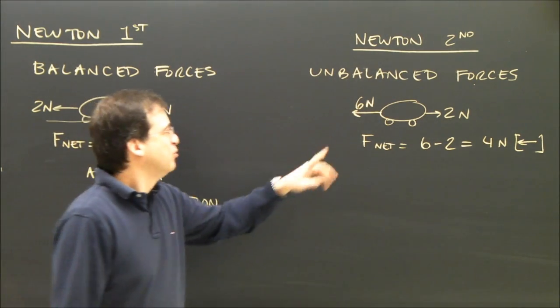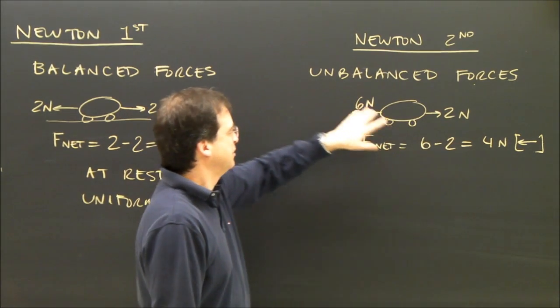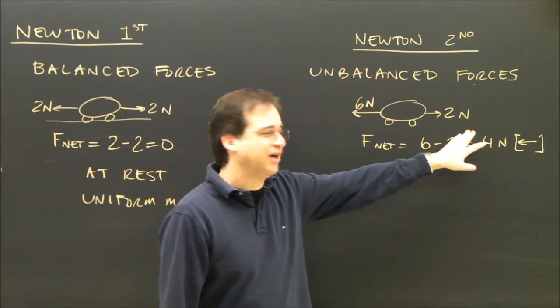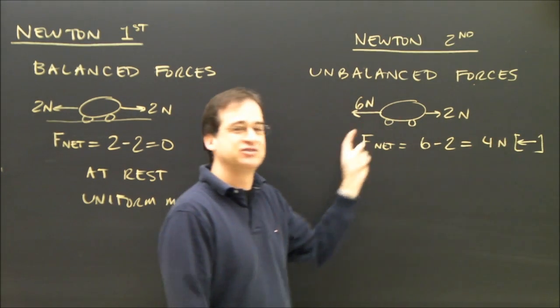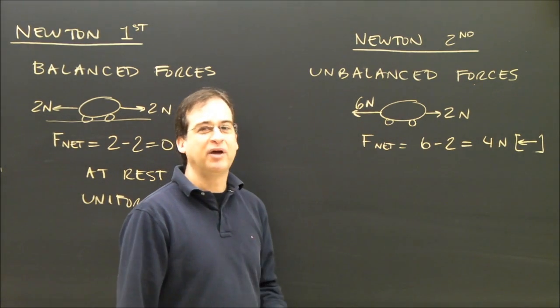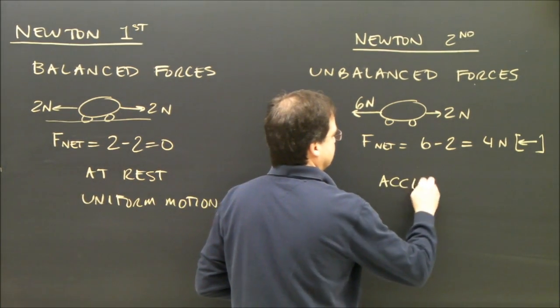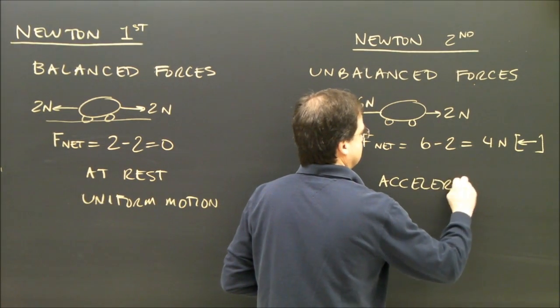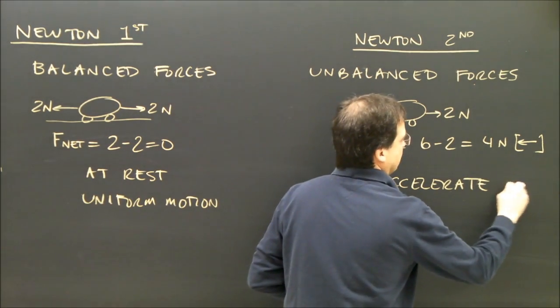Newton's second law steps in when the forces are unbalanced. If there are unbalanced forces, that means there's more force in one direction than another. You can look at the net force on this one. When there's four Newtons to the left, when you have an unbalanced force, Newton's second law says it's going to accelerate, and it's going to accelerate in the direction of the unbalanced force.